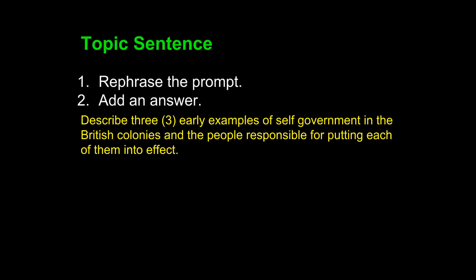Our prompt today, once again, is: "Describe three early examples of self-government in the British colonies and the people responsible for putting each of them into effect." We must think: what is this prompt about? What's the subject of it? What's the topic? What does my teacher want me to explore? And you can probably answer: self-government in the British colonies. This will help you achieve step one — rephrasing the prompt. And you can rephrase the prompt by asking yourself, what is the subject?